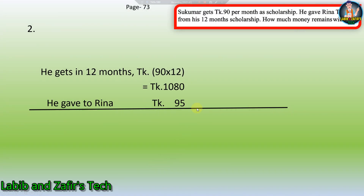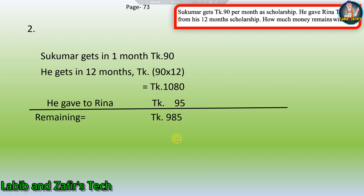Now let's go to our second word problem. Shukumar gets Taka 90 per month as a scholarship. He gave Reena Taka 95 from his 12 months scholarship. How much money remains with him? Shukumar gets in one month Taka 90, so in 12 months he gets 90 × 12 = Taka 1080. He gave Taka 95, so remaining is Taka 985. Taka 985 remains with Shukumar.